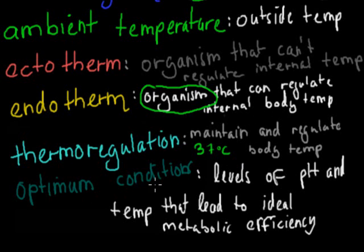Optimum conditions. Again, these are for enzymes. So level of pH and temperature are at that ideal level, which leads to metabolic efficiency. So for example, if we need to have a pH of 7 for our enzymes to work best, then our optimum condition is a pH of 7.